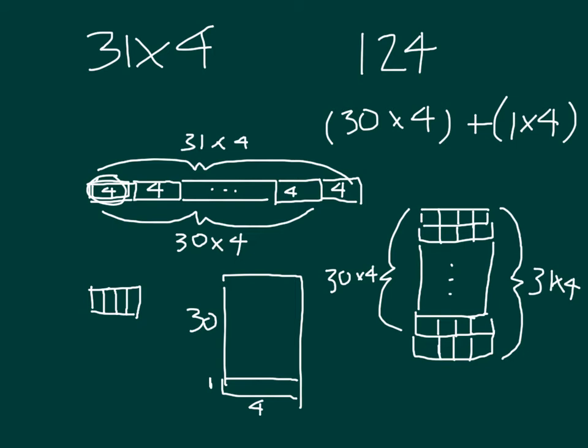What values would you put within each of those boxes within that area model? If we look at this here, this would be 30 and this is 4. So within there, you would put 30 times 4. And down here, we would put 1 times 4.